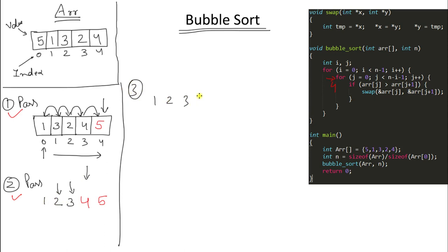In the third pass we compare 1 with 2 — no swap needed. We compare 2 with 3 — also fine. The third position gets sorted, but we're doing all these comparisons just because of how the code is written. This is not optimized — even if your array is already sorted, like giving 1, 2, 3, 4, 5, the program will still compare each and every time.